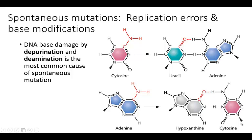DNA base damage based on depurination and deamination is the most common cause of spontaneous mutations. Here you've got a carbon bound to the nitrogens, and through deamination it changes to uracil — now bonded to oxygen instead of nitrogen — so you have uracil pairing with adenine instead of cytosine pairing with guanine. Adenine can also be changed to hypoxanthine, a different type of base, which would then bind to a cytosine and be replaced by a G after replication.